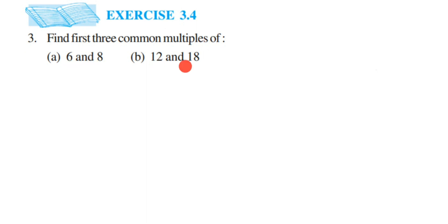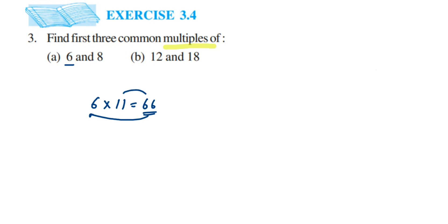Now, what do we mean by multiples? When you multiply a number with another number — for example, take 6 and multiply it by 11, which equals 66 — so 66 is a multiple of 6. It is also a multiple of 11, but here I am just focusing on 6. So 66 becomes a multiple of 6. Whenever they ask you to find a multiple, just multiply the given number with different numbers and the product will be the multiple.